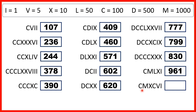And finally, we have C before M, so that's 100 before 1000, which is 900. We have X before C, so that's 10 before 100, which is 90. And we have V and then I, so that's 5 and then 1, which is 6. So our number is 996.